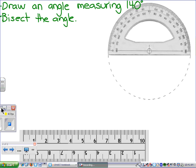Okay. Our next activity is to draw an angle measuring 140 degrees and then bisect that angle.